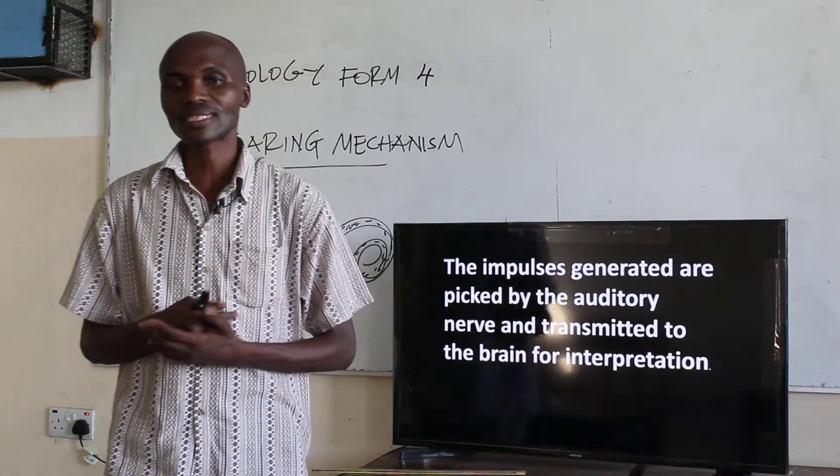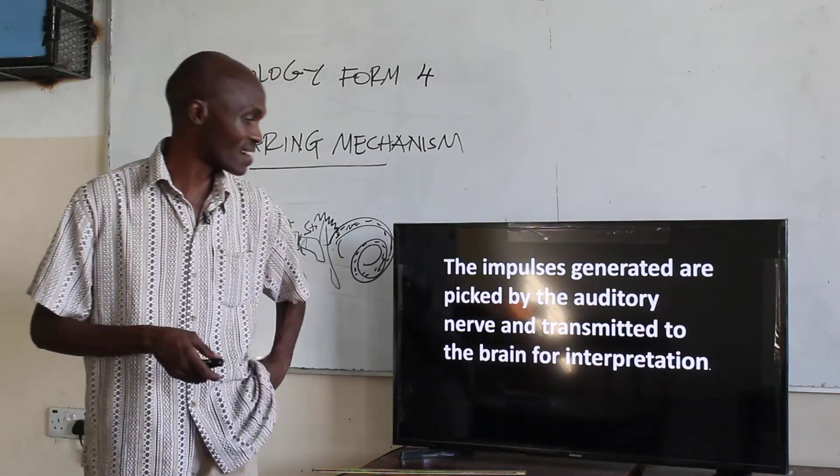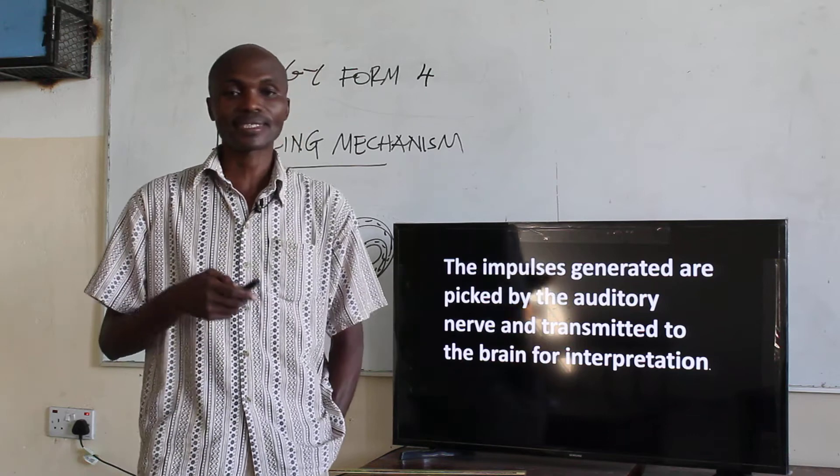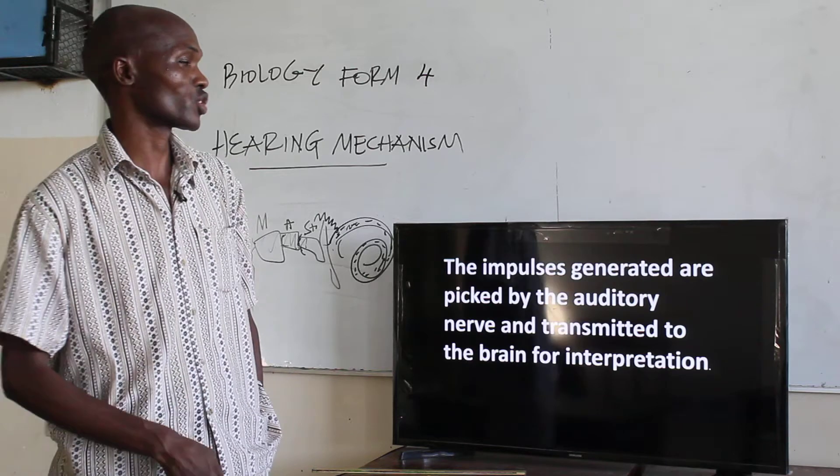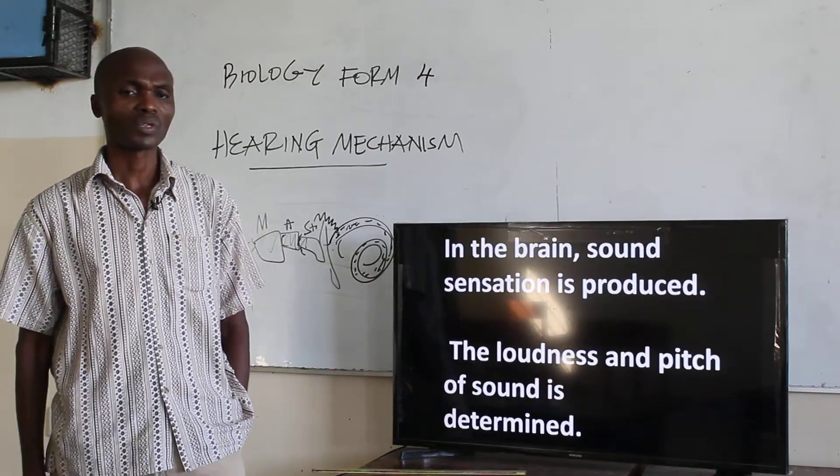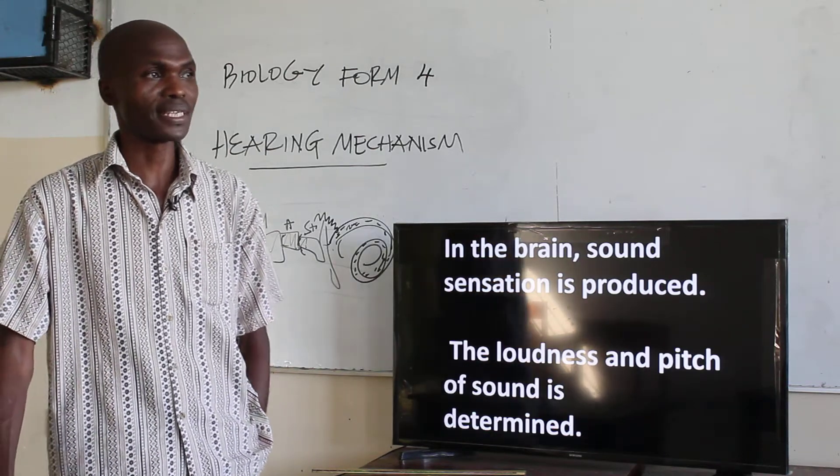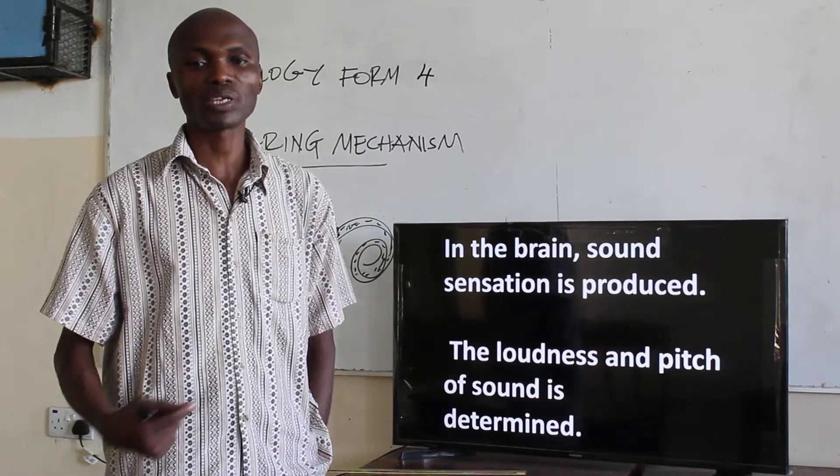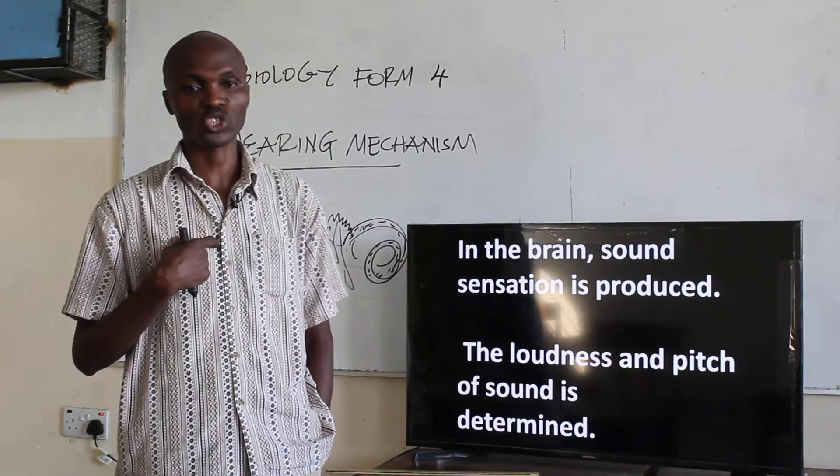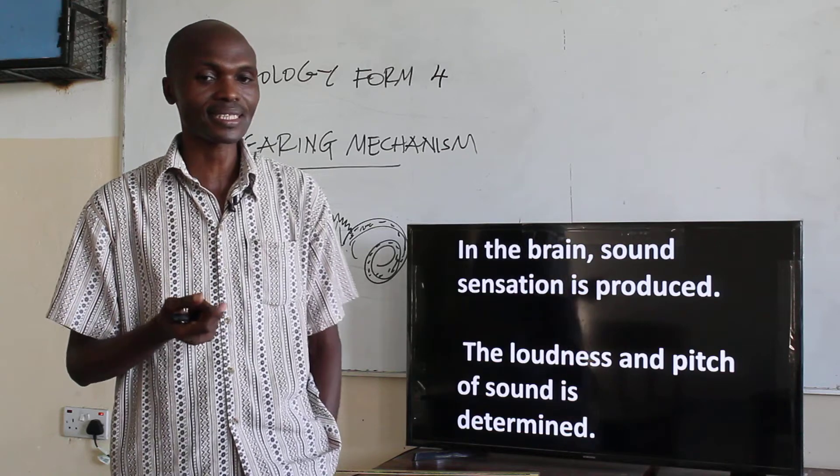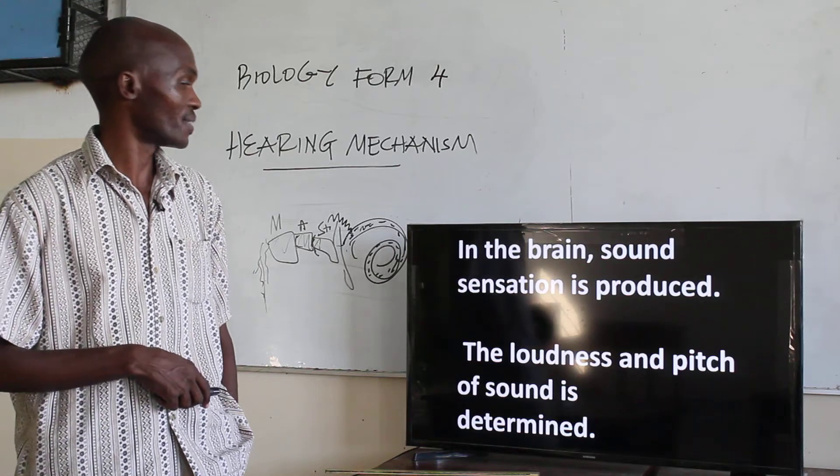The impulses are then generated and they are picked up by the auditory nerve that transmits these impulses to the brain from the partition. In the brain, sound sensation is actually produced. That means whatever impulse was being translated will now be interpreted as sound and sensation. The loudness and the pitch of sound is also determined equally in the brain.